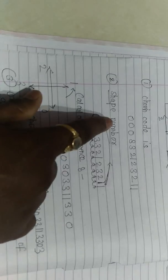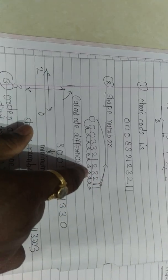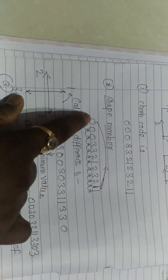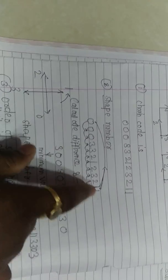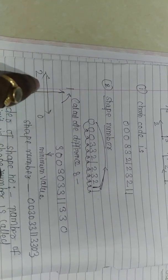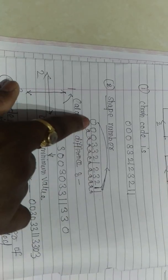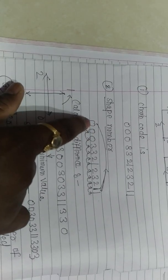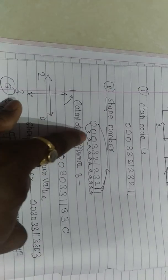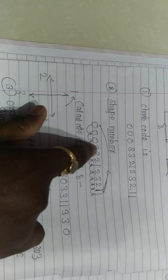Next we calculate the shape number. To calculate the shape number we first calculate the difference. After writing the chain code, we find the difference between the last number and the first number. Going from 1 to 0, the difference is 3. Then we calculate differences between consecutive individual numbers: difference between 0 and 0 is 0; difference between 0 and the next 0 is 0.